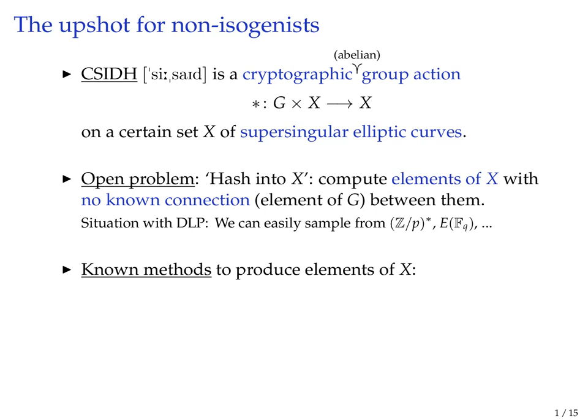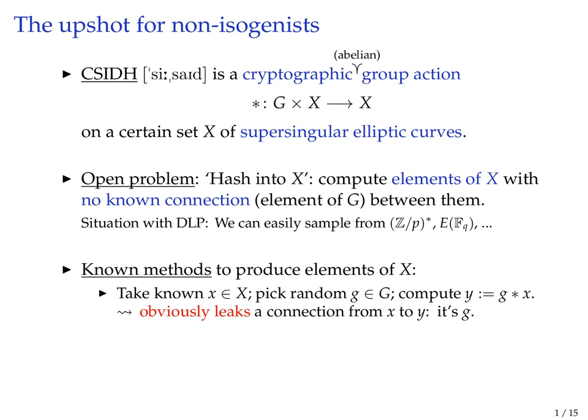Here is a complete survey of the known methods to produce elements of the set X besides random guessing. The first one is you take some known element of X—there are a few of these documented in the literature—and then you pick a random element of your group that has enough entropy and you apply it to this well-known public element. The problem is that this doesn't serve our purpose because we know what the connecting element is since we chose it ourselves.